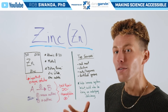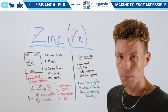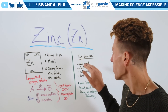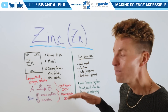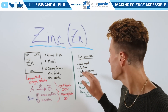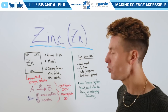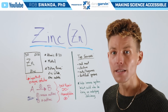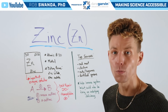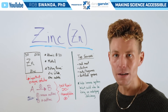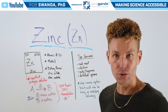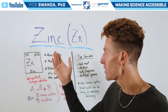For dietary purposes, top sources include red meat, chicken, nuts and legumes, as well as fortified grains that have been enriched with B vitamins and other micronutrients such as zinc.